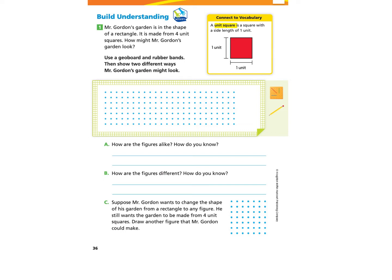Let's begin. Mr. Gordon's garden is in the shape of a rectangle. It is made from four unit squares. So I don't have a geoboard, but this is what it looks like right here in the picture. If you don't have a geoboard or rubber bands, that's okay. We can use these blue dots and our pencil to create different views of what the garden might look like.